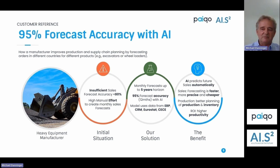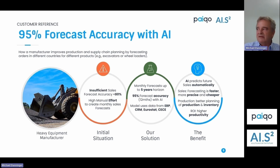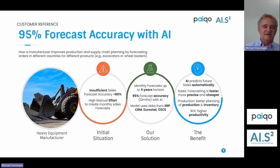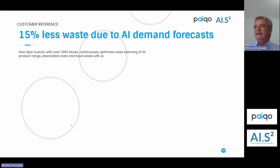The big benefit they see is getting an automatic sales forecast in the right time frame — much faster and more precise than anything they had before. It already helps them better plan their production and inventory. If you consider those machines: if you want one in Japan in three months, you better start building it now and putting it on a ship so it arrives in time.